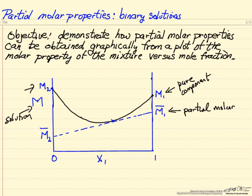What I'd like to demonstrate by calculations is that when I draw a tangent line — if I pick a point, this molar property at this mole fraction, and draw a tangent line to that point — where it intersects the axis gives me the partial molar properties. We're going to start with the definition of partial molar quantities and use some equations and manipulations to show that these intersections of the tangent are indeed the partial molar properties.